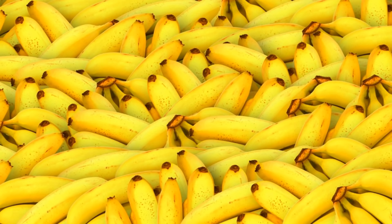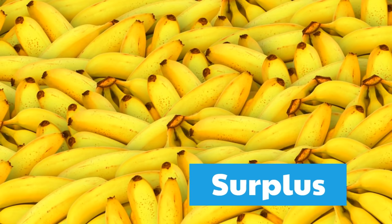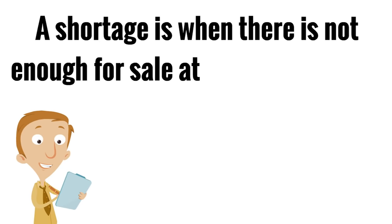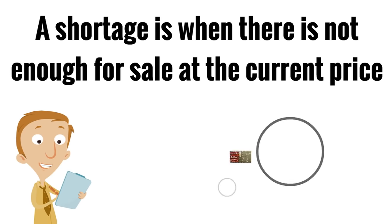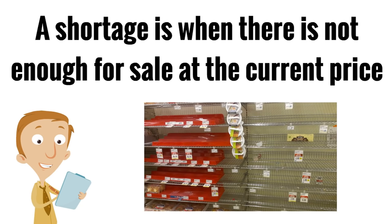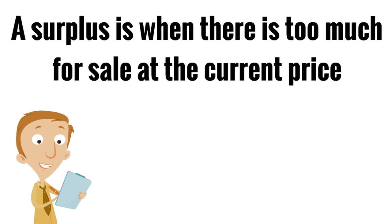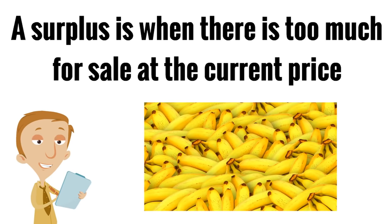These are bananas. A lot of bananas — tons and tons of bananas. In fact, this might be too many bananas for the store to sell. This is called a surplus. That's when there is too much for sale at the current price. A shortage is when there is not enough for sale at the current price, but a surplus is when there is too much for sale at the current price. Our example are the bananas.